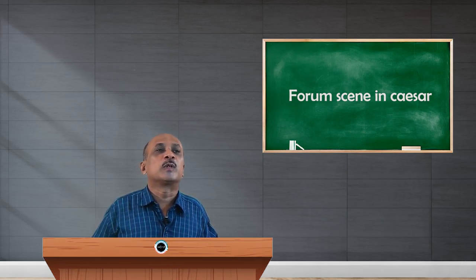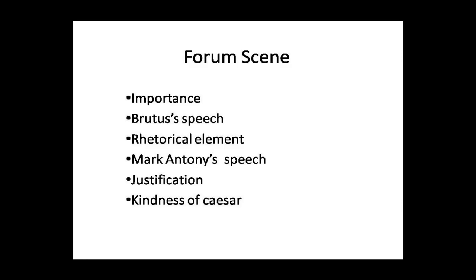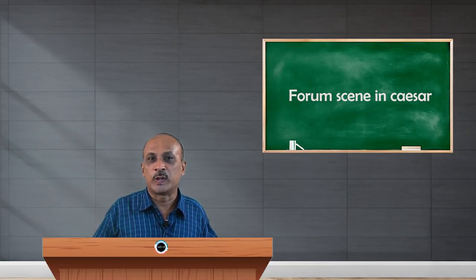In the beginning, it was Brutus who comes on the stage, on the platform to address the people. Before coming on the stage, Brutus has made an understanding and an agreement with Mark Antony that Mark Antony will pay tribute to Julius Caesar only with the permission of Brutus.